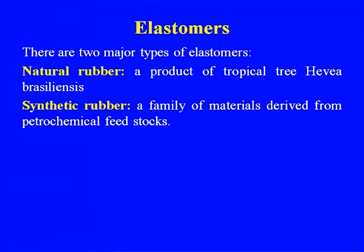There are two major types of elastomers: one is based on natural rubber, a product of the tropical tree Hevea brasiliensis, and the other is synthetic rubber, a family of materials derived from the petrochemical region. Some tropical countries produce natural rubber. India is also one of the major natural rubber producers, but synthetic rubber is playing an increasingly important role.